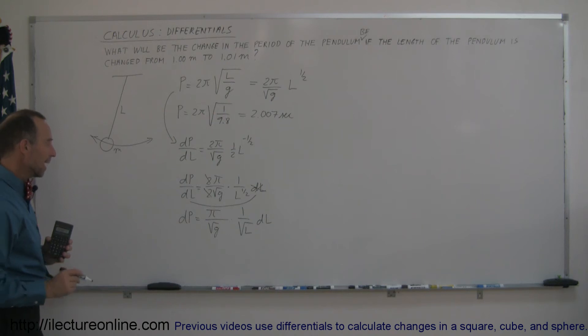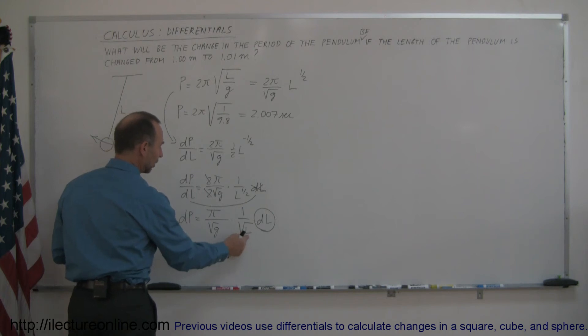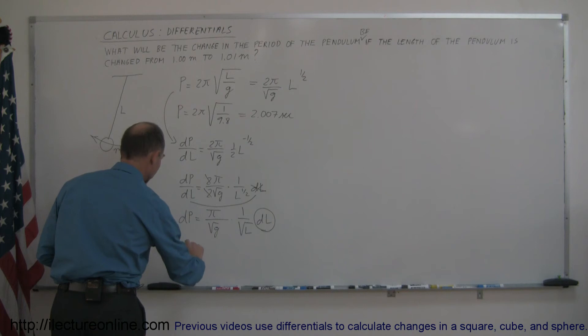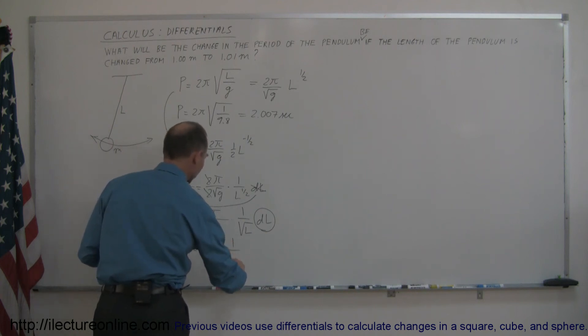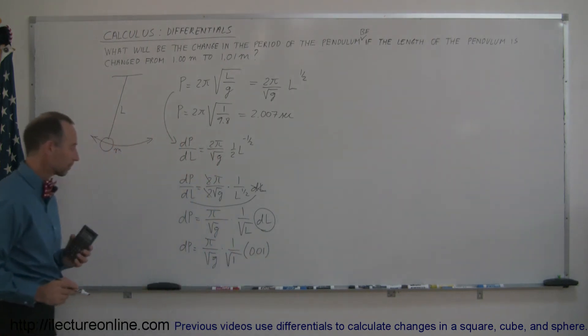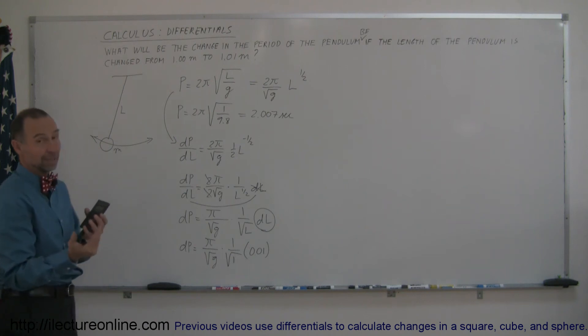Right there. And now what I can say is if I know the change in the length, I know the original length, I can then find the change in the period. So let's try that. The change in the period is equal to π divided by the square root of g times 1 over the original length. So the original length would be 1 meter and I'm going to change it by 0.01. Alright, the fact that it looks like it's going to be positive means that the period is probably going to be increased. It's going to be a positive change. It could be a negative change, but in this case it's a positive change.